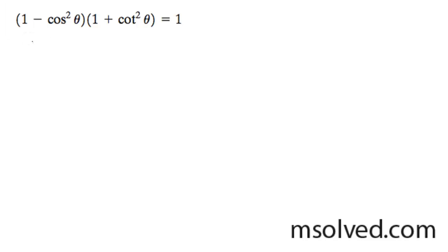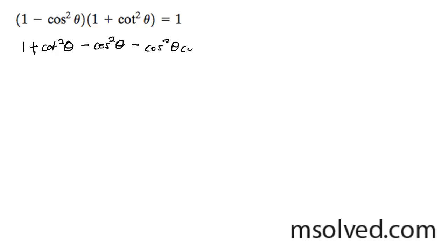Let's start off by distributing what's inside the parentheses. We're going to start off with 1 plus cotangent squared theta minus the cosecant squared theta, minus cosine squared theta times cotangent squared theta equals 1.